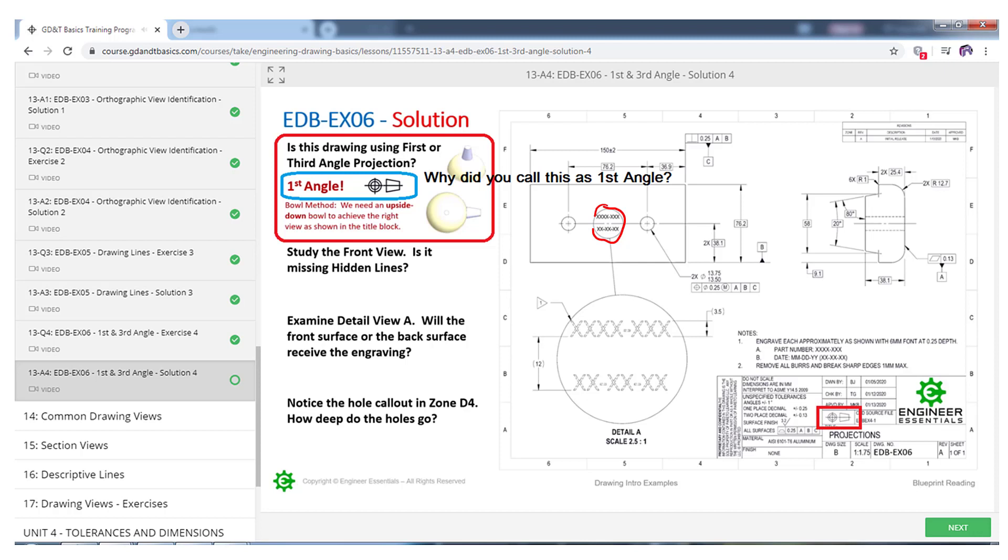So if you look at this drawing and you were thinking that it was third angle, then with those being hidden lines you would think that the engraving here would be on this surface when in fact it is not on that surface. Due to the fact that it's first angle projection, it is on this surface here.